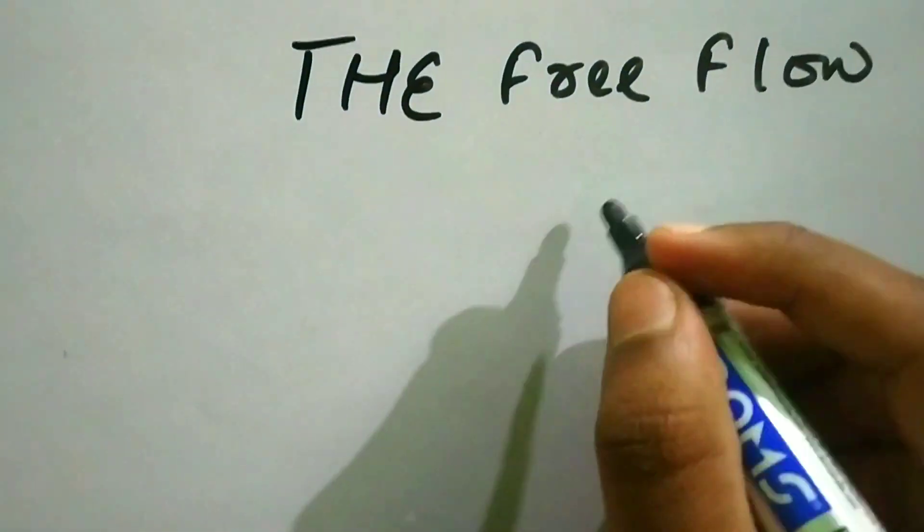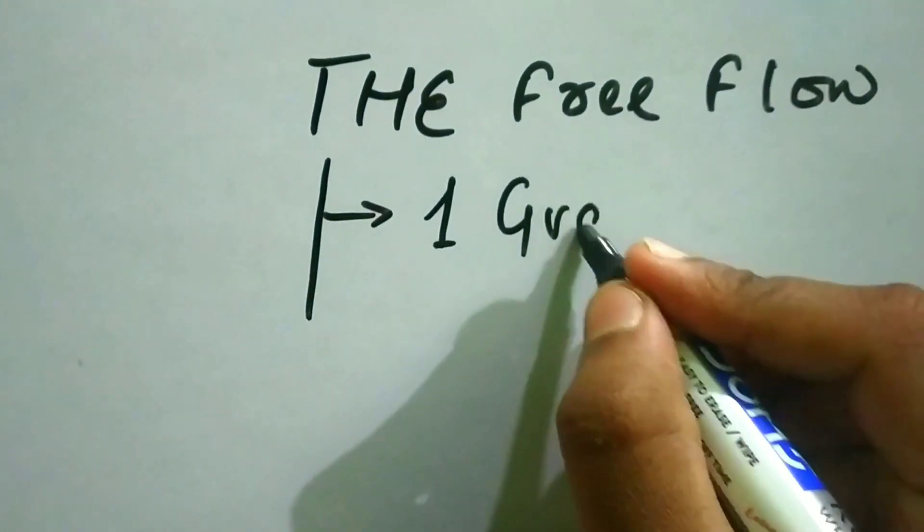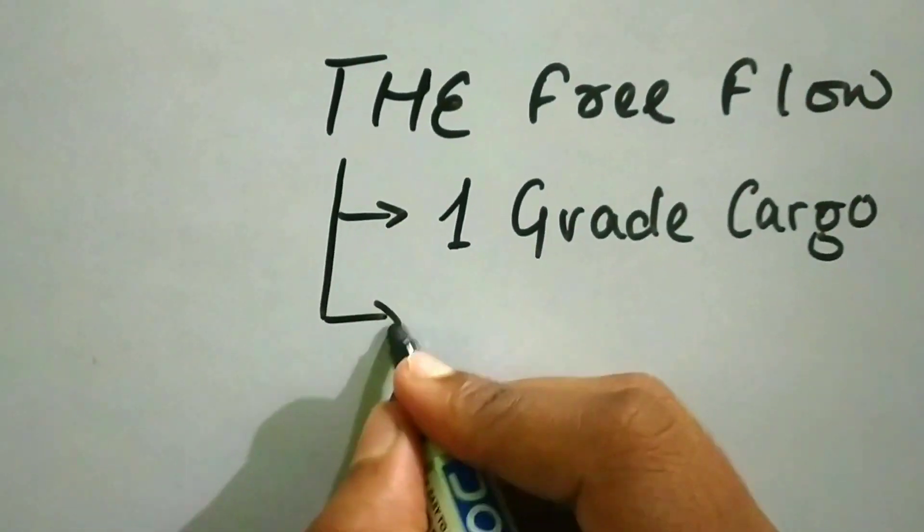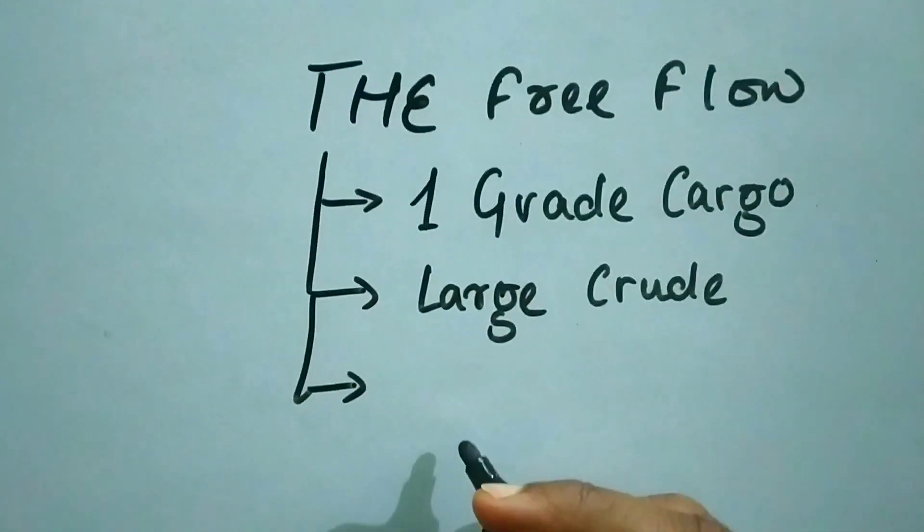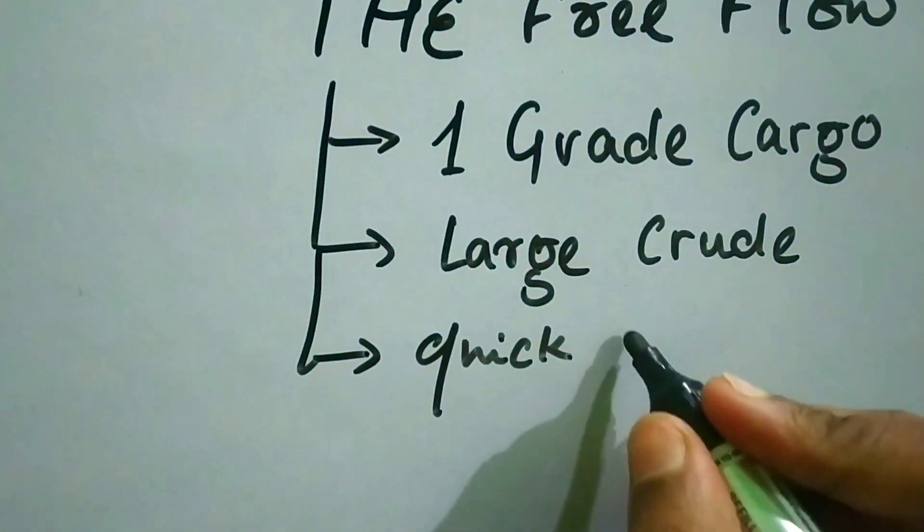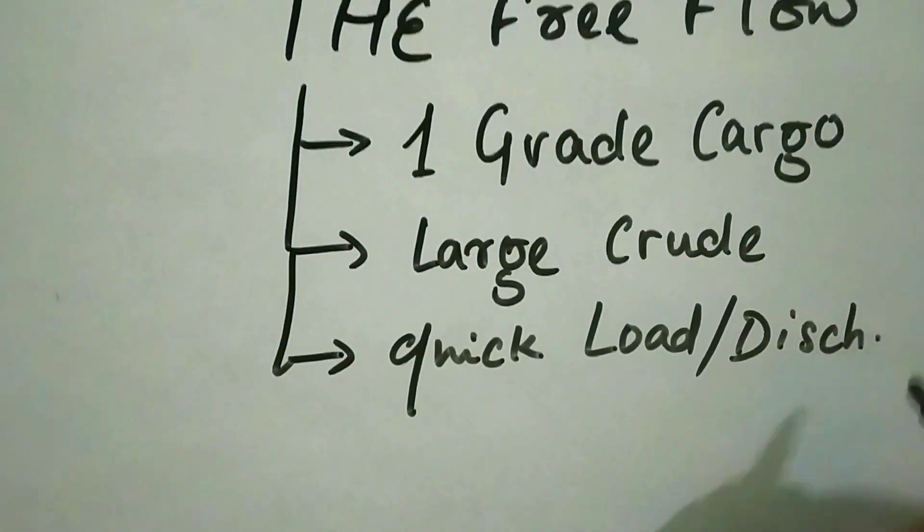First, let us talk about the free flow system. This system is mainly used on large crude carriers and is only used to load one grade of cargo because loading and discharging can be done quickly in this type of system.